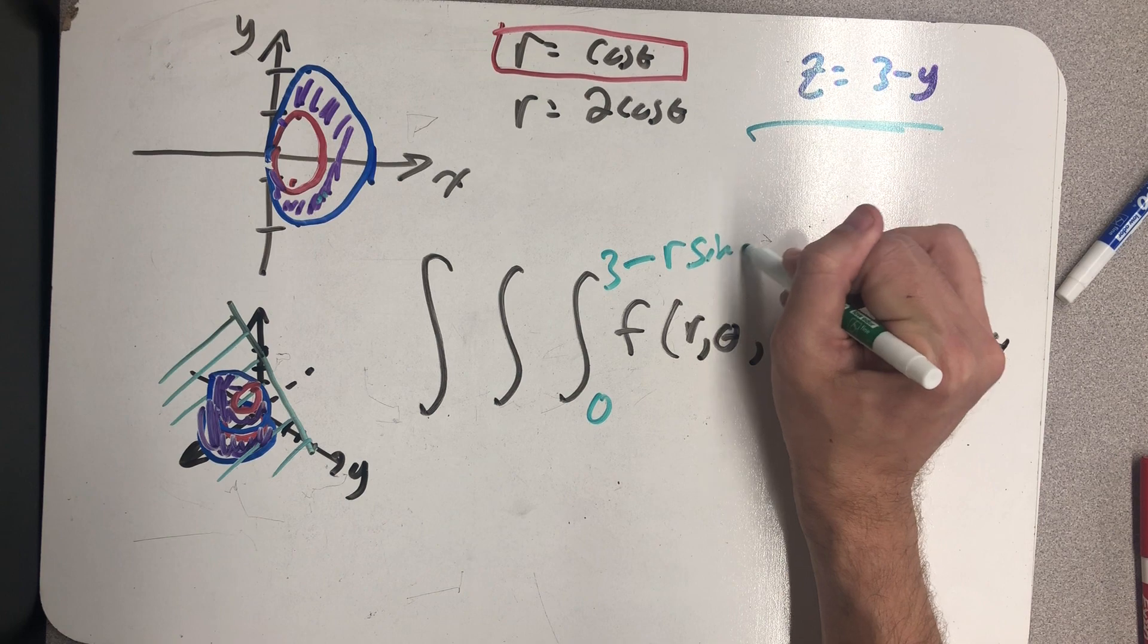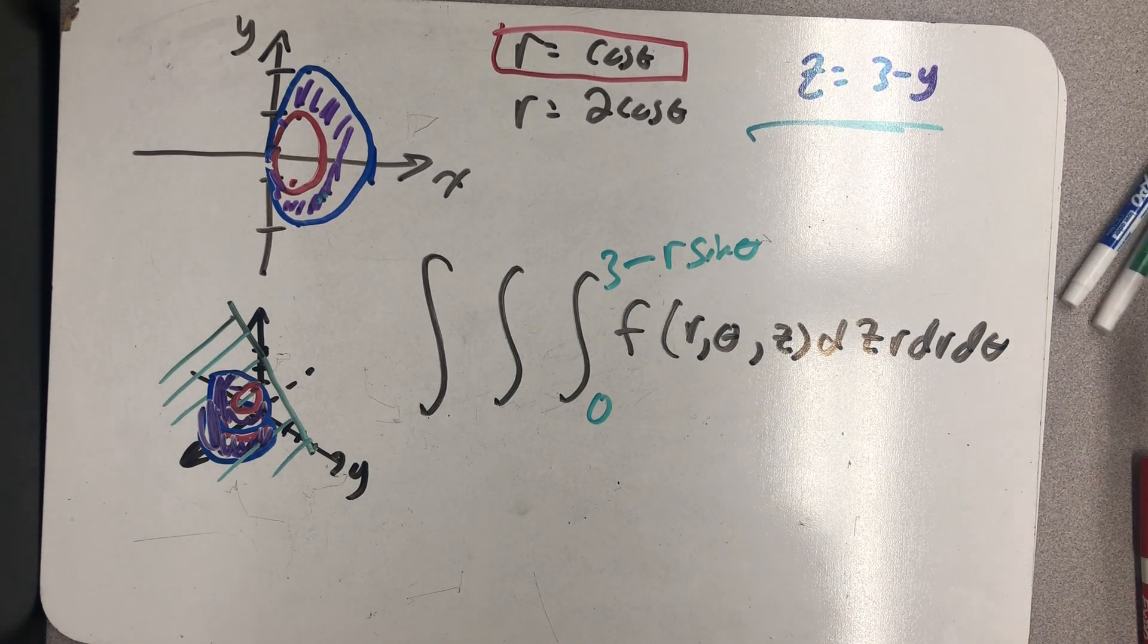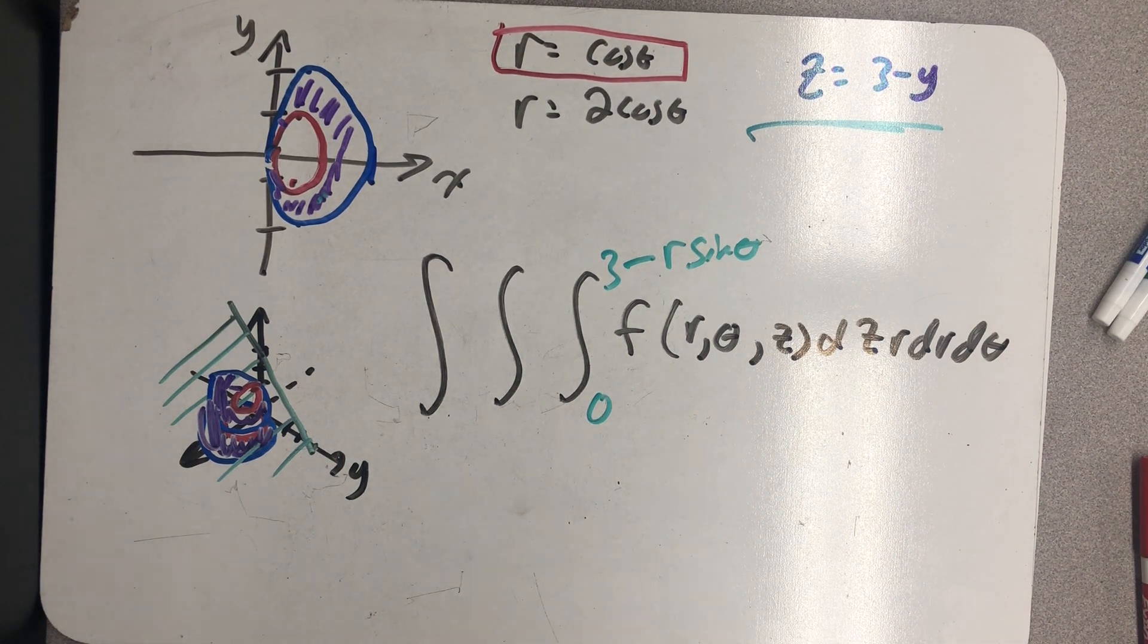Well, y is r sine theta, converting that to polar or cylindrical coordinates, whichever you prefer to say right now.